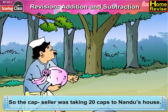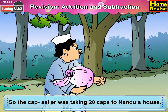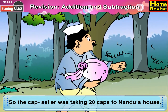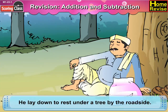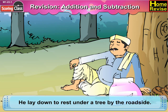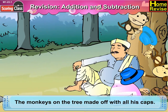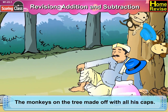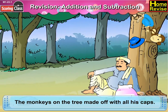The cap seller was taking 20 caps to Nandu's house. He lay down to rest under a tree by the roadside. The monkeys on the tree made off with all his caps.